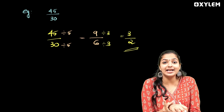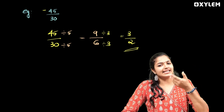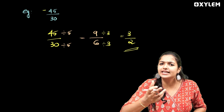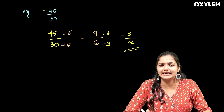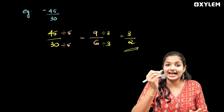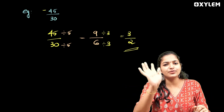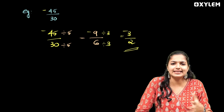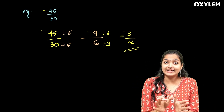Now, this is the negative rational number. The negative version is minus 45 by 30. What is the standard form of this? It's simple — we still need to find the common factor, but we keep the negative sign. So the answer is minus 3 by 2.